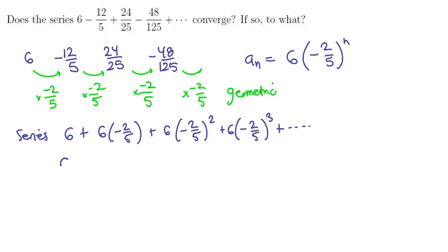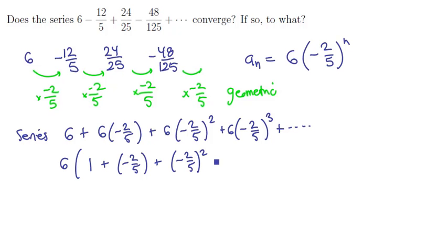What we can do here is pull out a 6 from all of these terms, and we'd be left with 1 plus negative two-fifths, plus negative two-fifths squared, plus negative two-fifths cubed, all the way down the line. This is what our series looks like when we've cleaned it up a little bit.